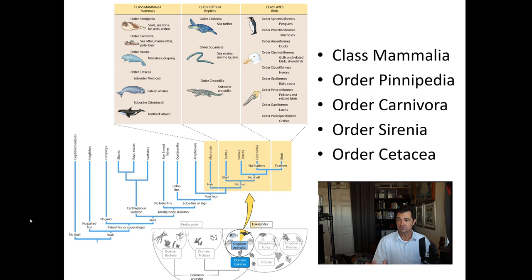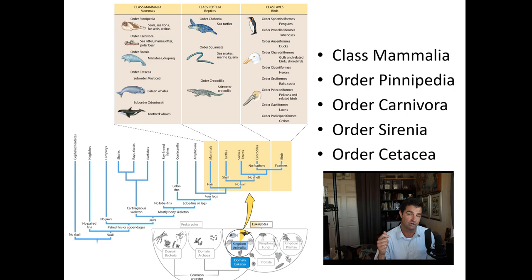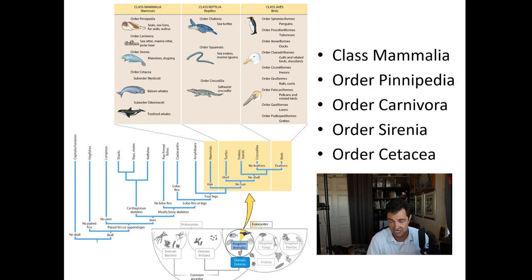When we talk about marine mammals there are several groups. They're all in class Mammalia. The first is order Pinnipedia — the pinnipeds — then order Carnivora, order Sirenia, and order Cetacea. These represent our basic groups, and in this cladogram you can see how they all fall out.